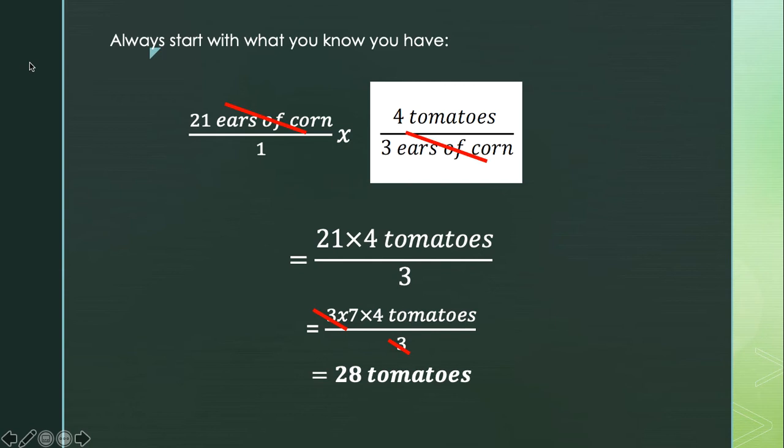Another way to do this is directly in your calculator: do 21 times 4 and then divide by 3, and you would still get 28.